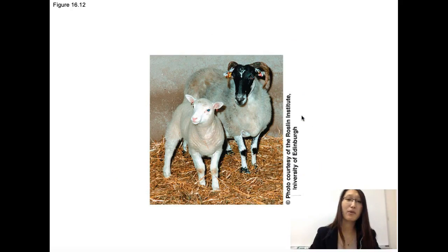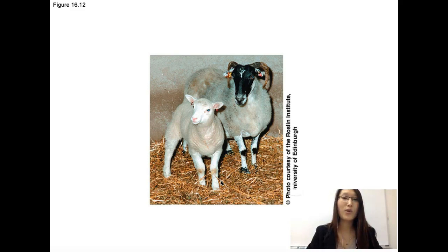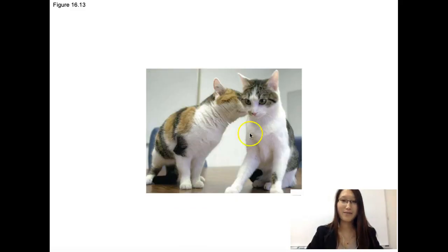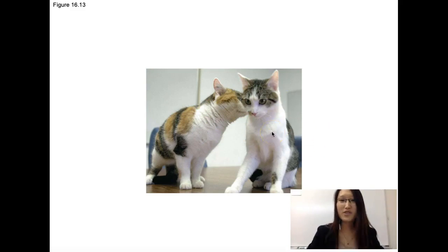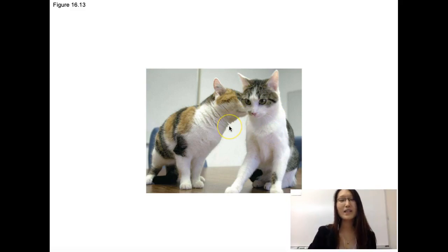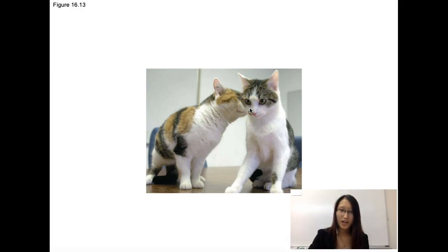Here are some examples of clones. We have Dolly, the first cloned mammal, and we have CC — Carbon Copy. On the left side is the parent, and on the right side is the clone. This is really interesting — they're both calico cats, but as you can clearly see, the pattern of the fur color is not exactly the same. So why is that? They're clones, which means they have the same exact DNA, which is true. So what happened here?